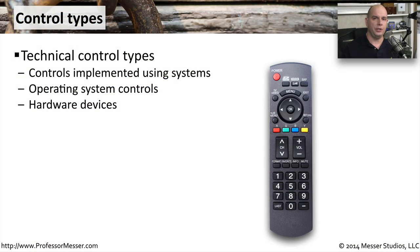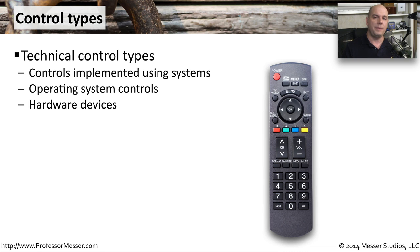When dealing with physical security, there are different control types that we can categorize these methods into. One is the technical control type. As technologists, this is one we're certainly familiar with, where we're using systems within our organization to manage this security. It might be controls, rights, and permissions within operating systems, or it might be things like hardware devices like firewalls and intrusion prevention systems that are all based around technology.